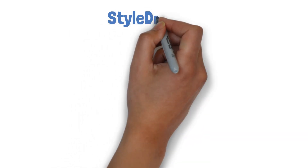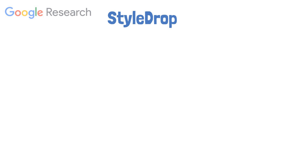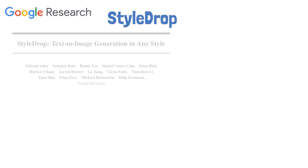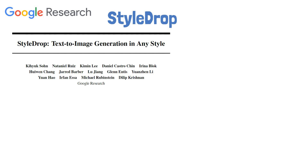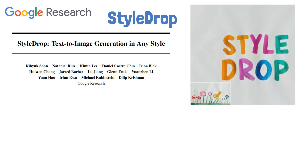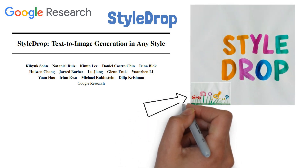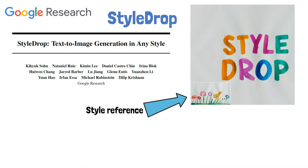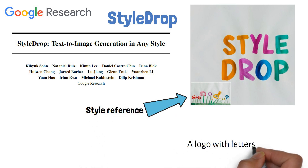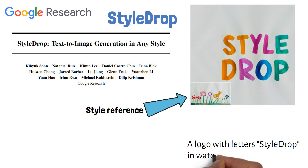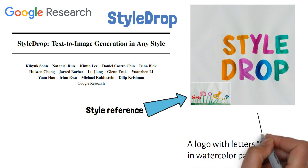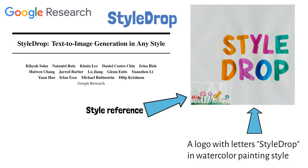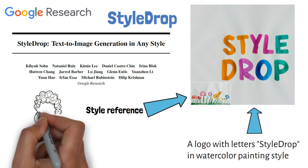Thank you for joining this CSBoard video about StyleDrop, a new paper from Google Research that presents a novel method that directs text-to-image generation models to follow a specific style. For example, in this image we see at the bottom left an image that is used as a style reference. Then, using the prompt along with StyleDrop in watercolor painting style, the model generates this image which clearly follows the style of the reference image, which is very impressive.